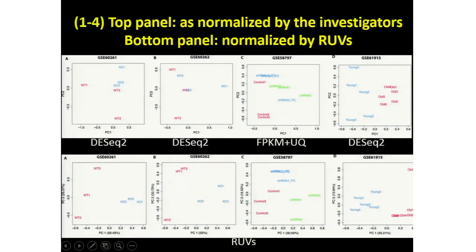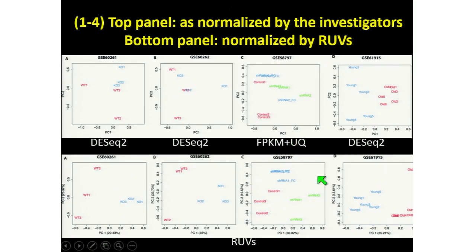This is the result of using a method called RUVS on the first four panels. You can see that the mix-up of knockout and wild type has been separated — the wild type/knockout distinction is now on the first axis. Similarly for another panel, wild type and knockout are separated. In a third, we've managed to group the three colour groups better. The age-separated panel was already quite well separated and it still is.